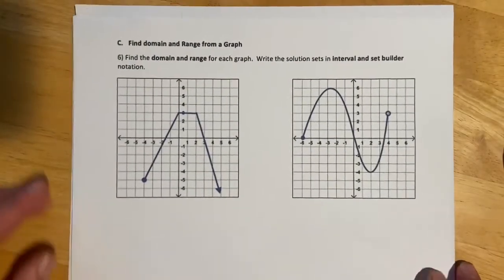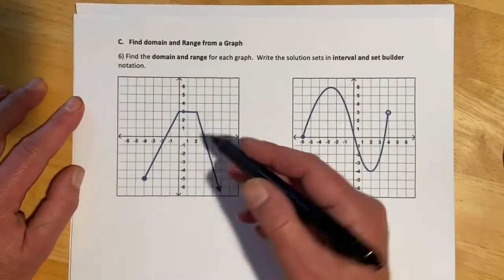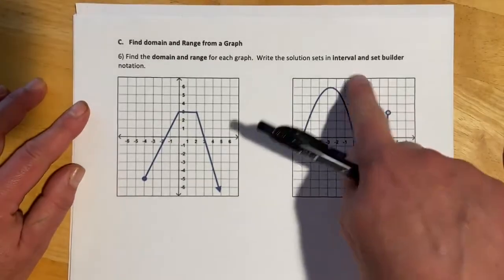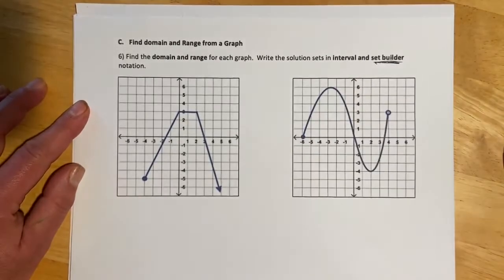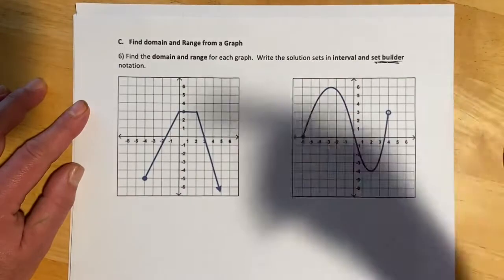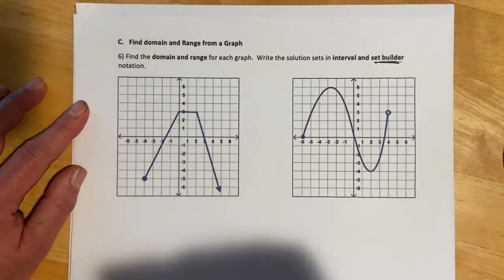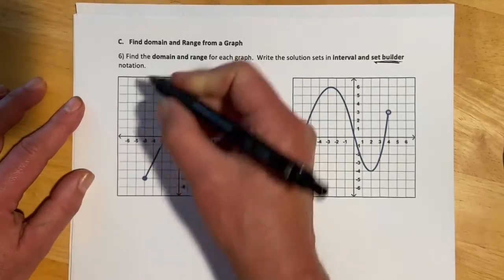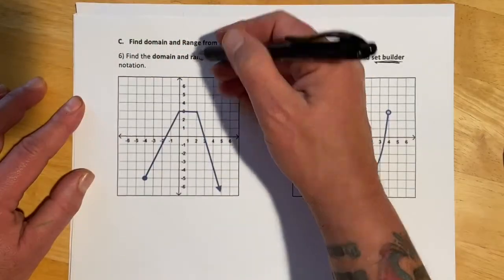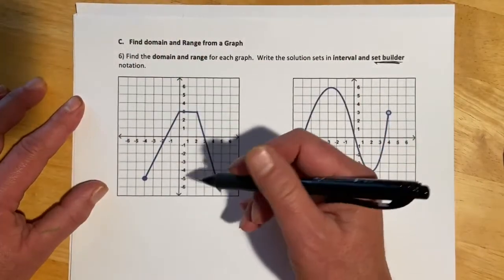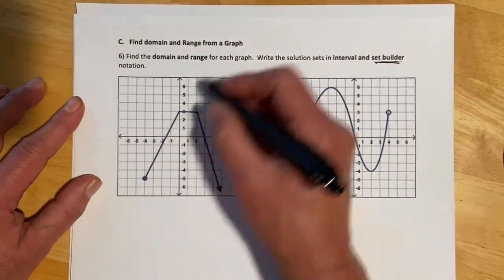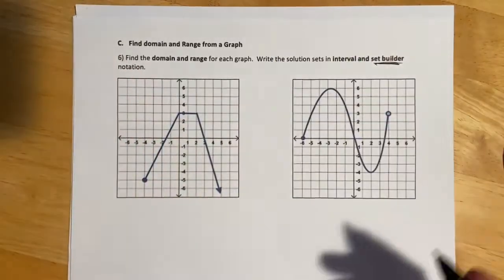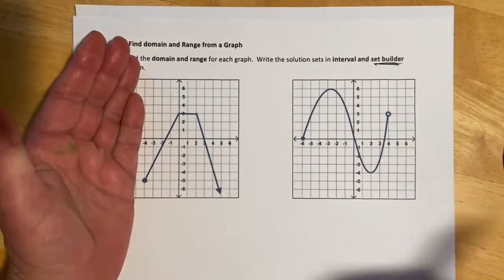This last question asks us to find the domain and range based on a graph, reporting in interval notation and set builder notation. Domain is our X values and range is our Y values — or inputs and outputs. A good way to think of domain is farthest to the left and farthest to the right. So here, that's as far left as the graph goes: the domain starts at negative 4. That's a solid dot, so I'll use a bracket.